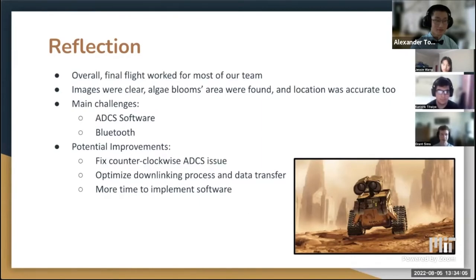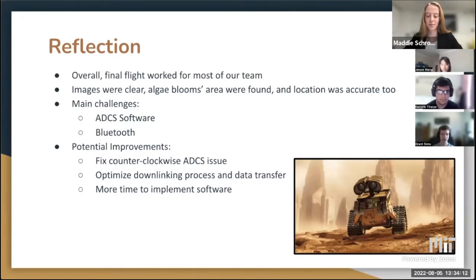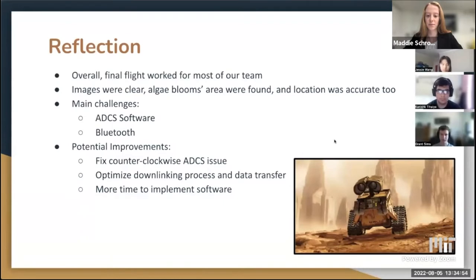Potential improvements include fixing the counterclockwise ADCS issue and managing orbit in a different way. We also want to optimize the downlinking process because we downlinked each image right after it was taken — if the downlink process took too long, the subsequent image would be delayed, causing issues with getting the image centered correctly in the orbit. Overall, just more time to make the software robust and fix some issues we were encountering with setup.